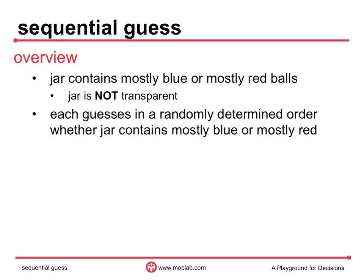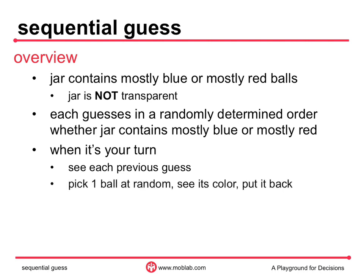Let's look at the information that you will have when it's your turn to guess. First, you will see the guess of each group member who guessed before you. Second, you will pick one ball from the jar, see its color, and then put it back. Because each person puts his ball back in the jar, the contents of the jar never change. Armed with this information, you choose whether you believe the jar contains mostly red balls or mostly blue.